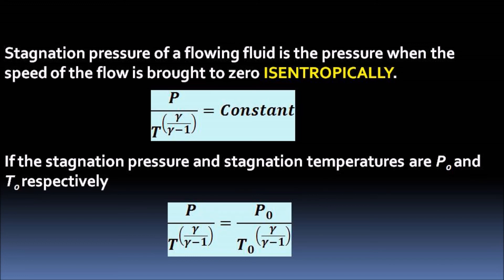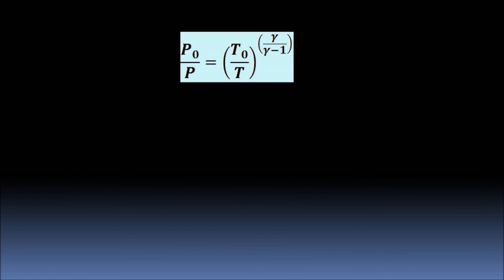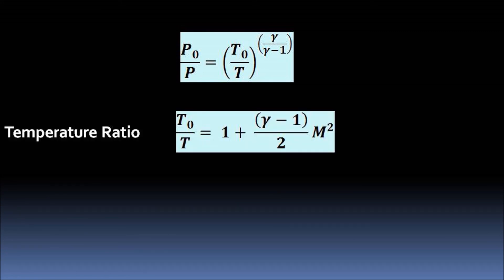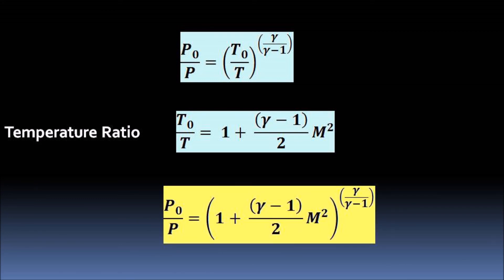We rearrange the terms of the isentropic relationship, separating the pressure terms on one side and the temperature terms on the other. We then substitute the expression for stagnation temperature, replacing the temperature ratio term in the isentropic relation, and this gives us the final expression for stagnation pressure.